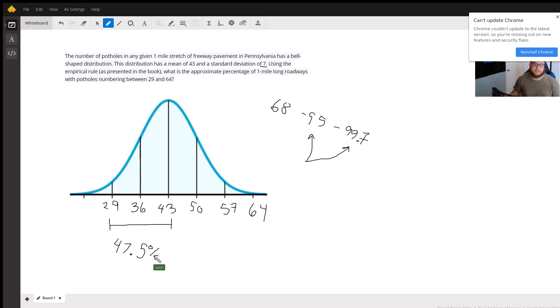So 47.5% of all of these one mile stretches of roads are contained in this half of the normal distribution, or from 29 to 43. And from 43 to 64, this is going to just be half of our 99.7 rule.